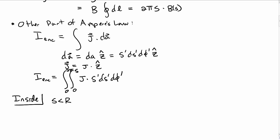Inside the loop, for s less than r, i enclosed is 2π times j times the s integral, which gives π s² j, where j is the volume current density.